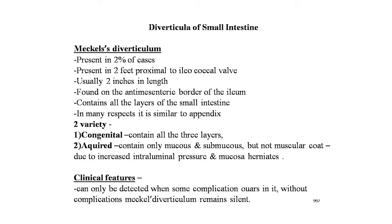We will start with the diverticulum of the small intestine. First is Meckel's diverticulum. Meckel's diverticulum is present in only 2% of cases, 2 feet proximal to the ileocecal valve. It is usually 2 inches in length and is found on the antimesenteric border of the ileum. In one-fifth of cases, it contains heterotopic epithelium like gastric, colonic, and rarely pancreatic tissue.